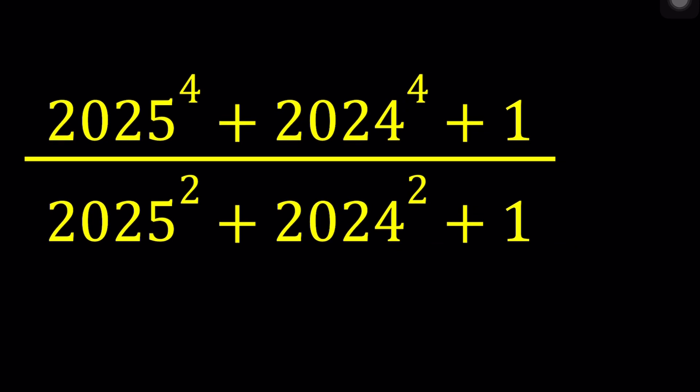To be able to solve this problem, I'm going to go ahead and call this x equals 2024, which means that 2025 is going to be x plus 1, right? I'm going to go ahead and change color here because it's hard to see.